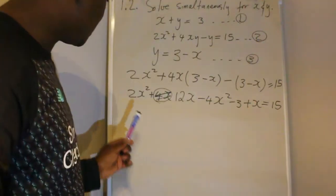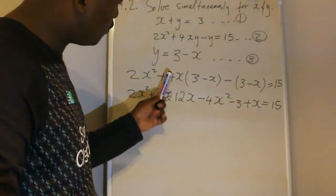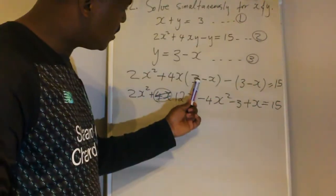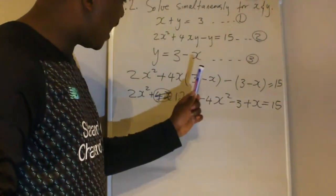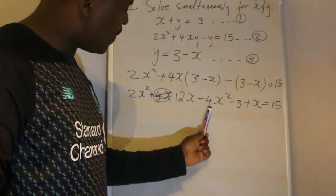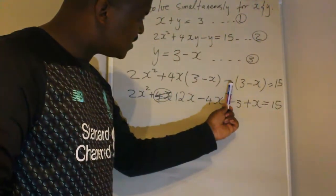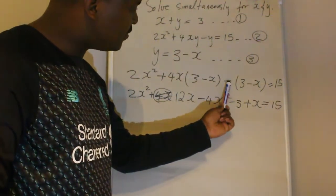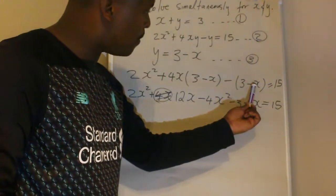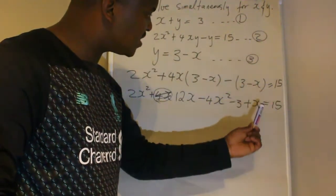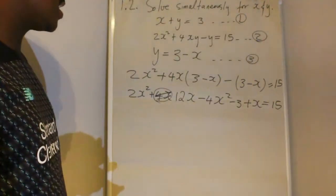Let me repeat this. The 2x squared goes down as it is. 4x times 3 is 12x. 4x times x is minus 4x squared. Negative times 3 is negative 3. Negative times negative x is plus x, equal to 15.